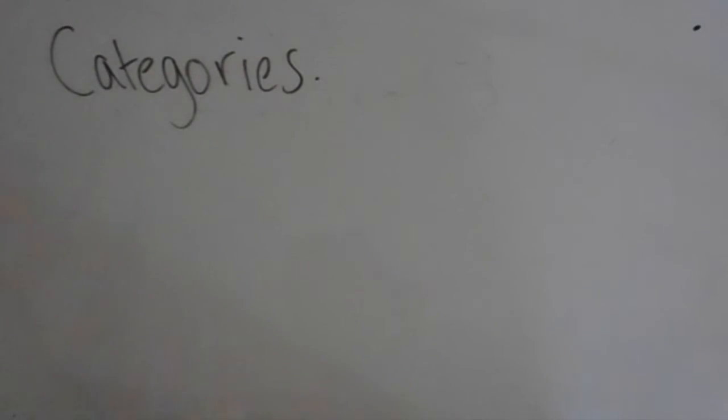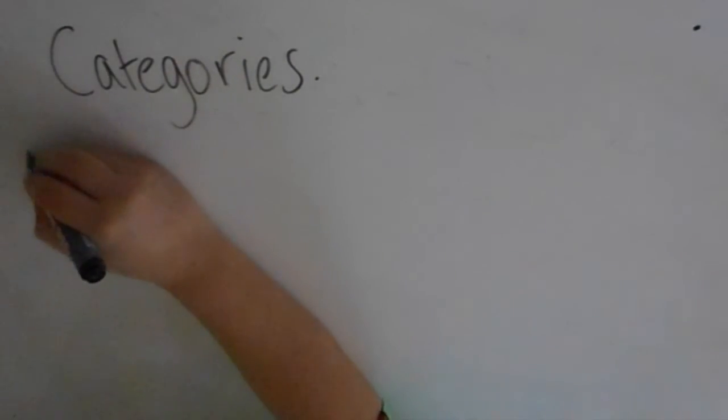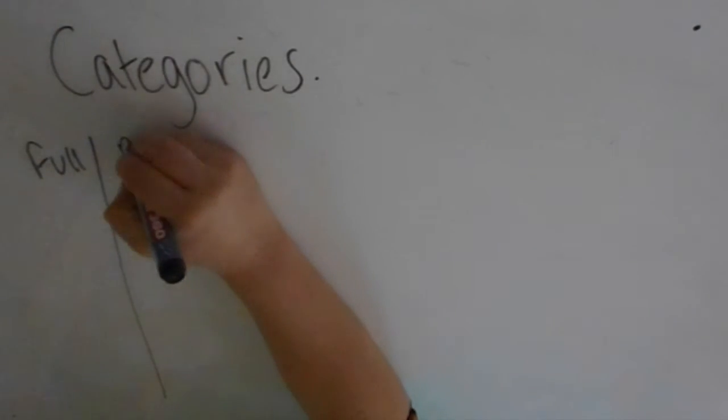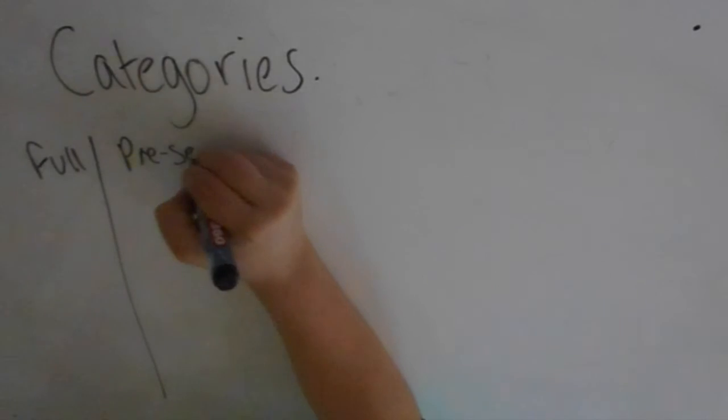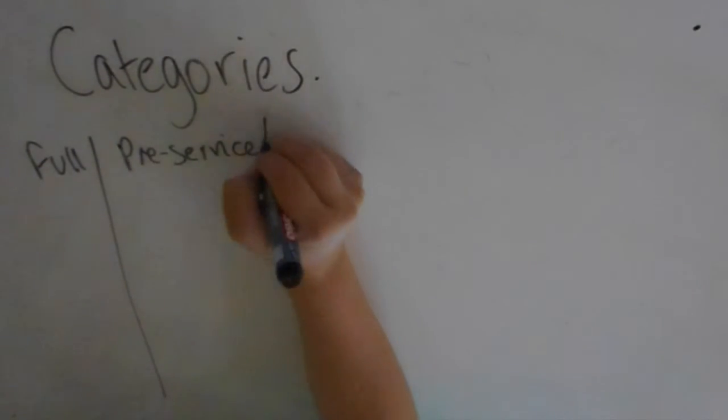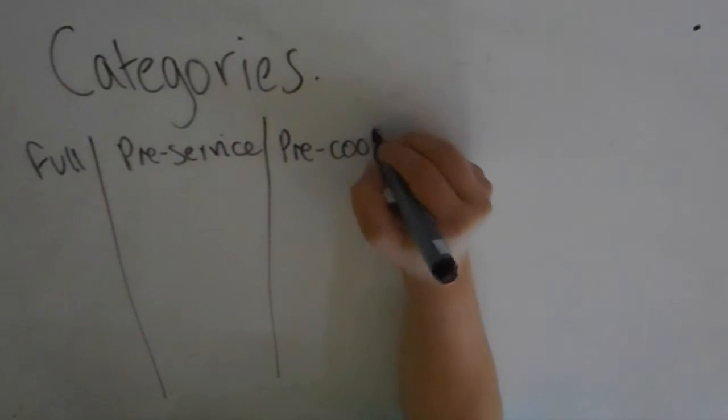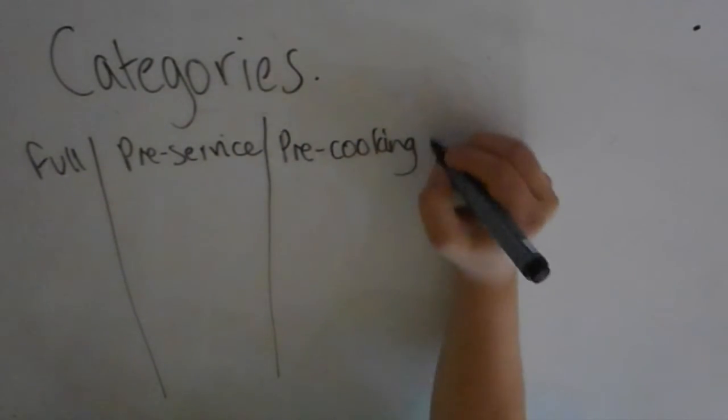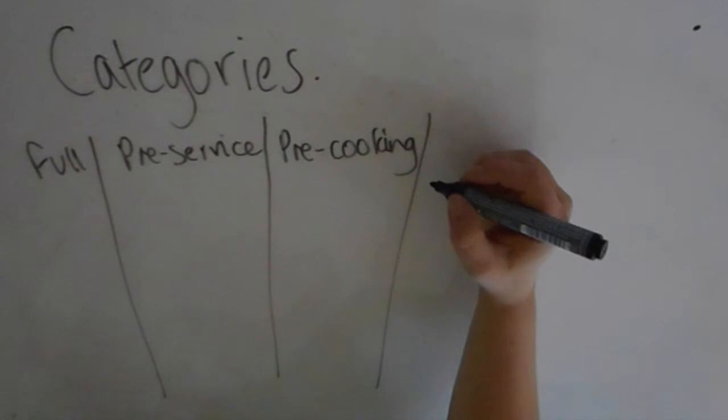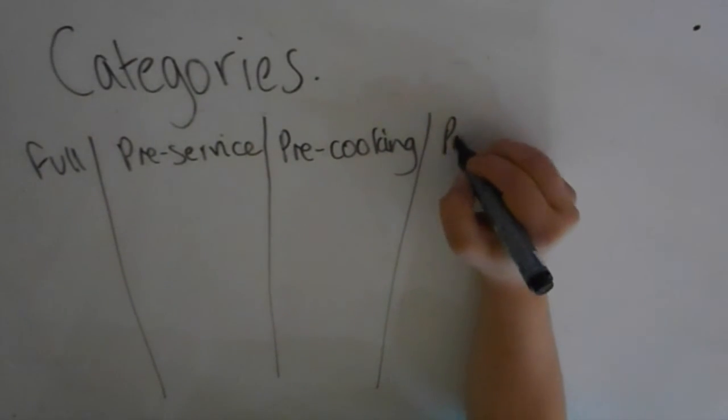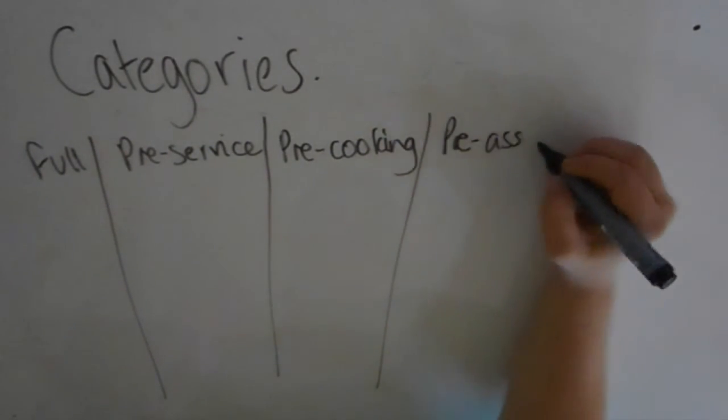The next thing I'm going to do is put these convenience products into categories. This is just one way of categorizing them. You can start with full convenience, meaning they've been fully prepared - there's nothing you have to do. Then pre-service, meaning they're ready for service but you might have to portion them. Then pre-cooking convenience products, which have been prepared up until the point you need to cook them.